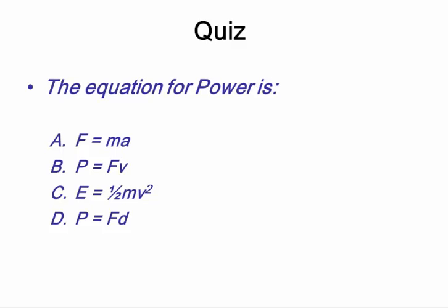So, quick question. What's the equation for power? Is it A, B, C, or D? B. That's right. Power equals force times the average velocity.